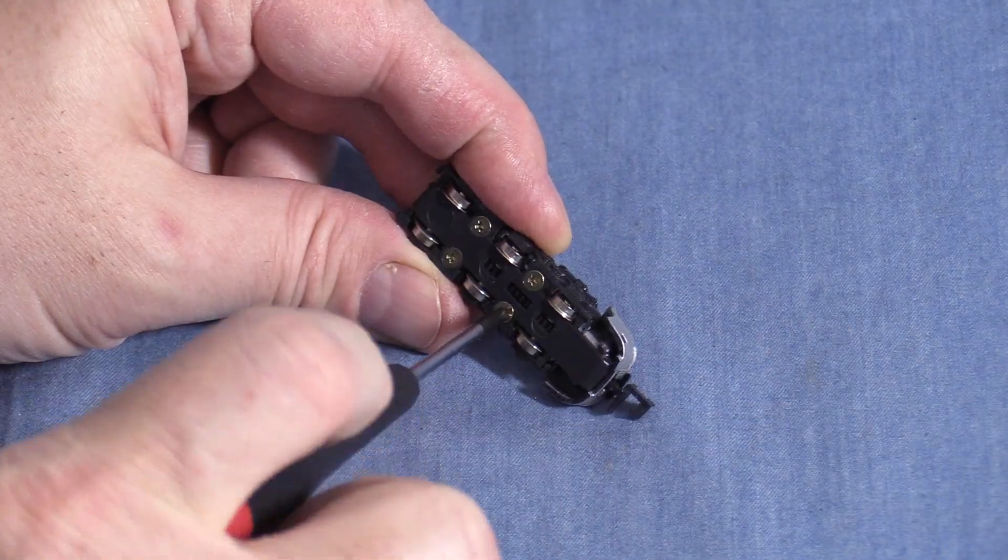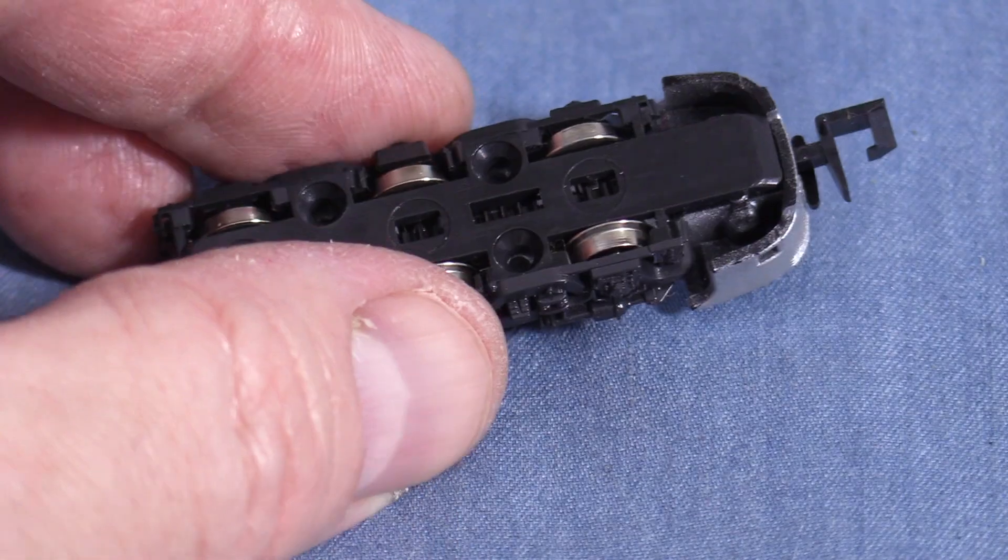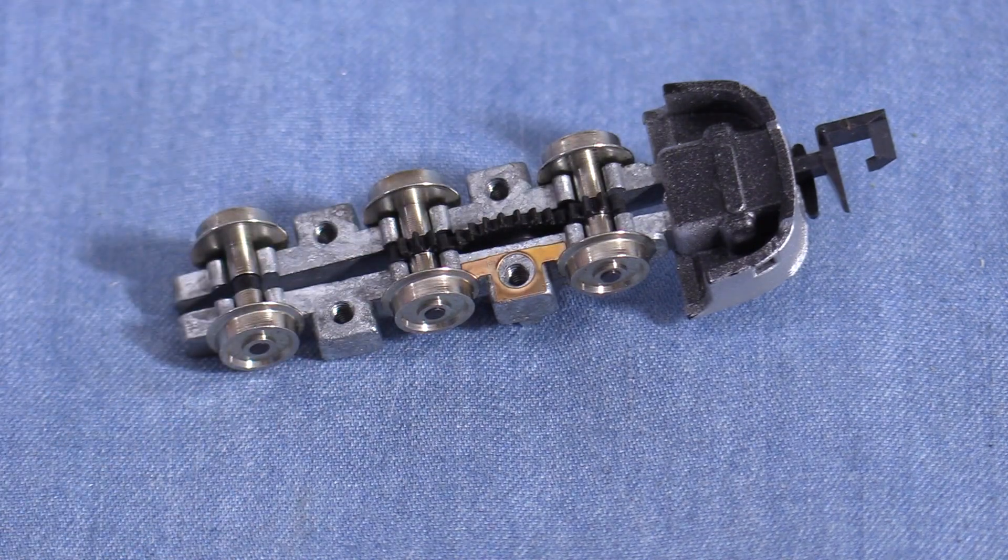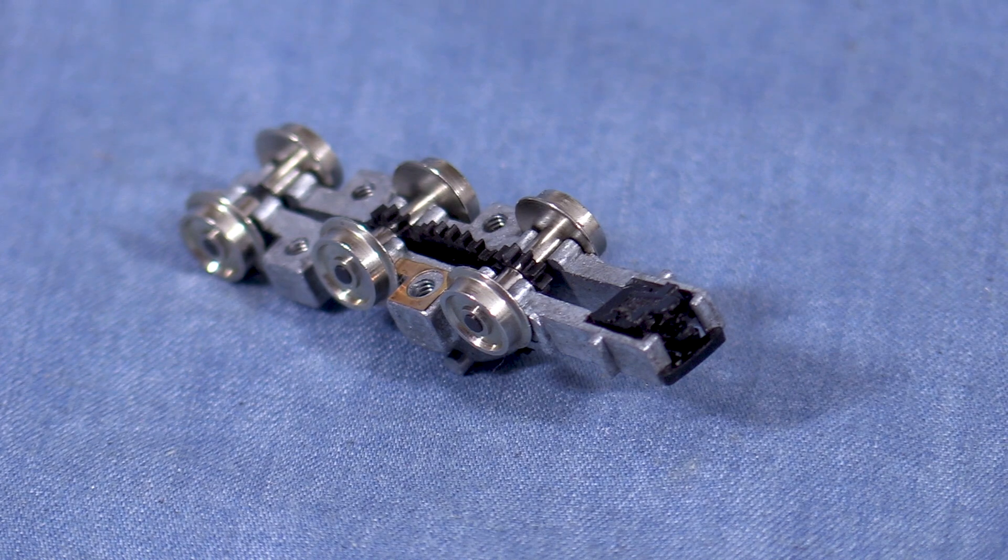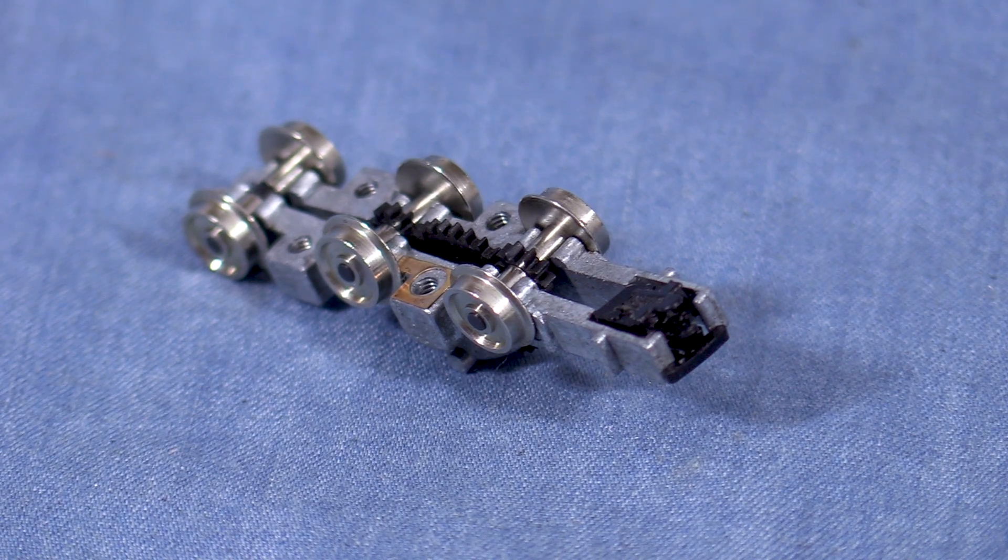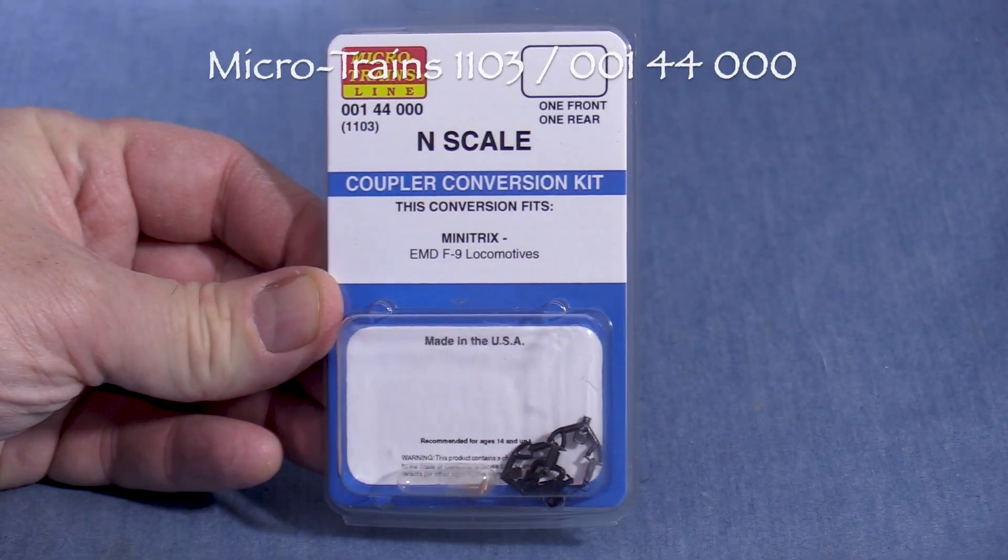The trucks on the A unit are held together with four screws. Once the screws are removed, I can take the truck apart. The coupler may fall out on its own at this point. There's nothing holding the truck together, so I'll need to be careful not to lose any parts. I'm tackling the front truck first.